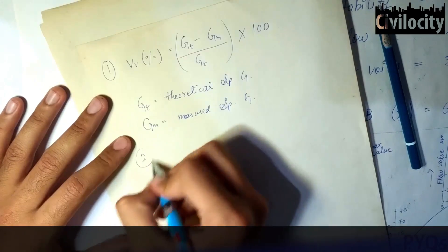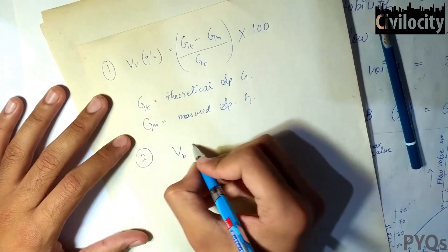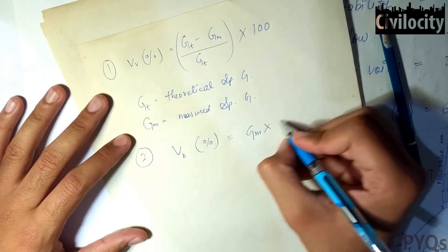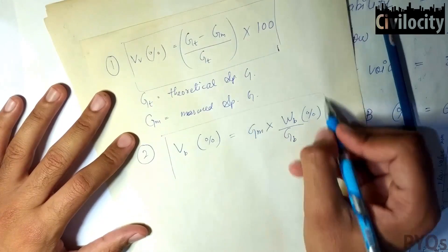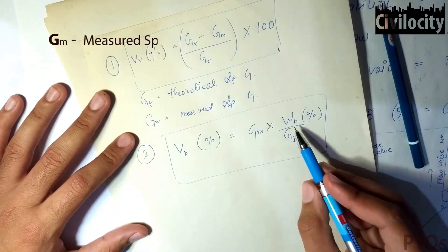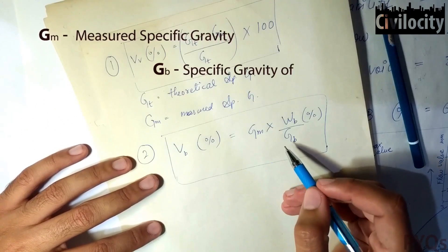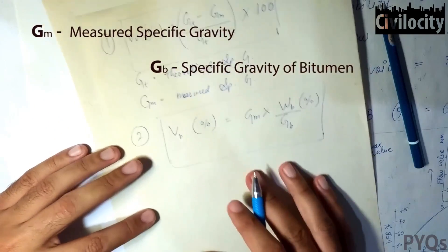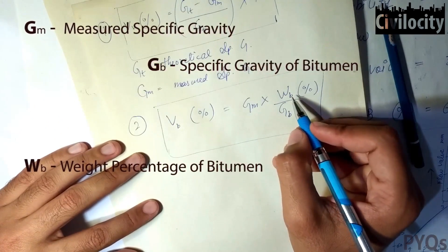The second formula is to find out the percentage of voids filled with bitumen. This is given by Gm into Wb divided by Gb, where Gm is the measured specific gravity, Gb is the specific gravity of the bitumen, and Wb is the percent weight of the bitumen.